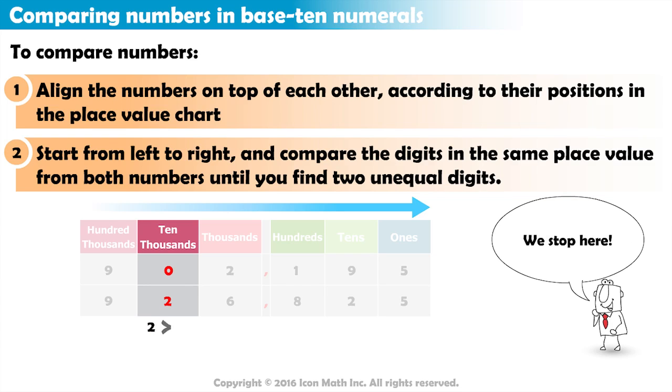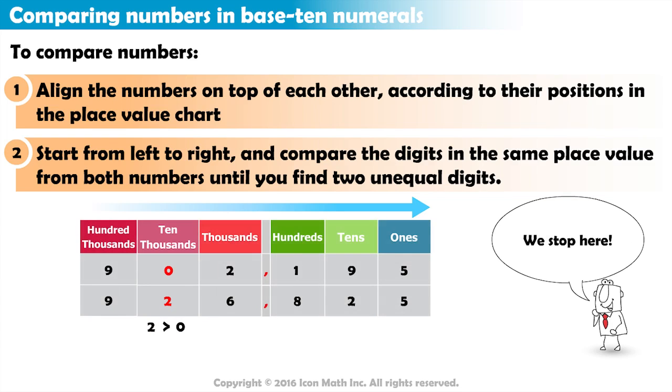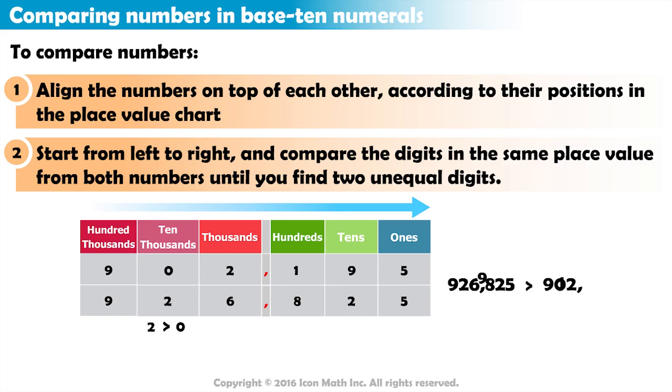Since 2 is greater than 0, it means that the second number is greater than the first one. And we write 926,825 is greater than 902,195.